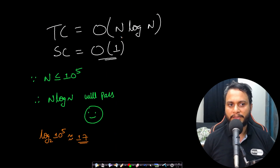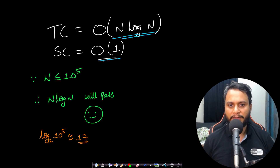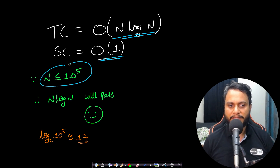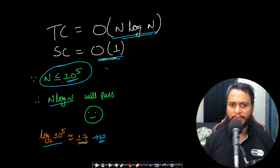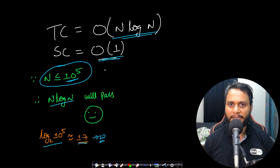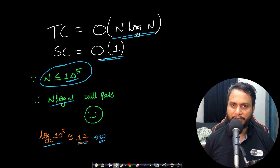The time complexity of the sorting approach is O(n log n), because after sorting you do one O(n) iteration. Space complexity is O(1). Since n ≤ 10^5, log(10^5) base 2 ≈ 17, so roughly 20 × 10^5 = 2×10^6 operations, well under 10^8, meaning this runs in time. But let's look at a better approach.